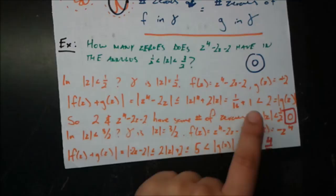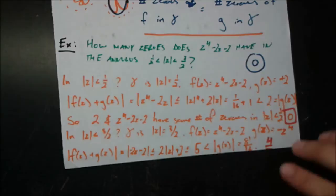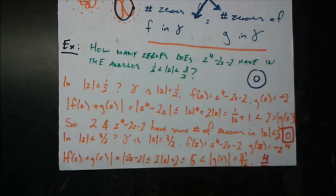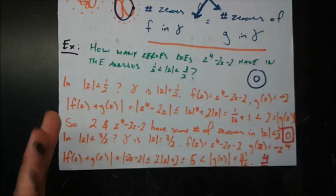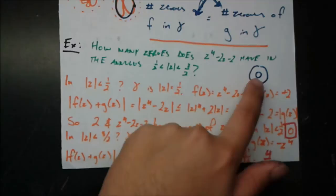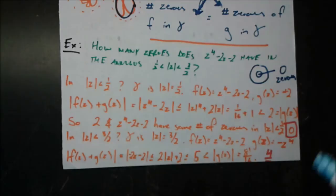And 17/16 < 2, which is the modulus of g(z) = 2. So modulus(f(z) + g(z)) < modulus(g(z)) on gamma, meaning f and g have the same number of zeros inside the disk of radius 1/2. The constant function g(z) = 2 has no zeros at all, so f(z) = z⁴ − 2z − 2 also has zero zeros inside that small disk.